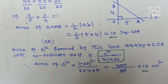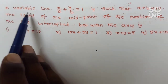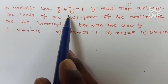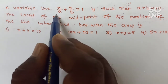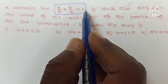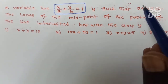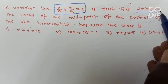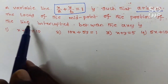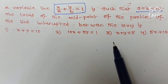The next problem: a variable line x/a plus y/b equals 1 — clearly this is in intercept form — is such that a plus b equals 10. That means the sum of the x-intercept and y-intercept is 10. Find the locus of the midpoint of the portion intercepted between the axes.